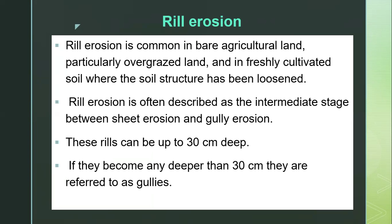Rill erosion is often described as the intermediate stage between sheet erosion and gully erosion. These rills can be up to 30 centimeters deep. If they become any deeper than 30 centimeters, they are defined as gullies.